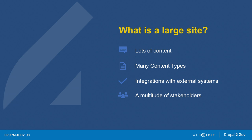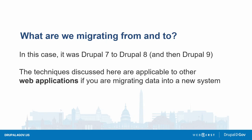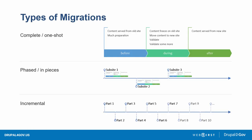What is a large site? It probably has lots of content, maybe many content types, integrations with external systems, and a multitude of stakeholders to go along with the content. We were migrating from Drupal 7 to Drupal 8, then eventually to Drupal 9, and you could use these techniques for any web application. HTTP is going to be a theme that runs through this entire talk.